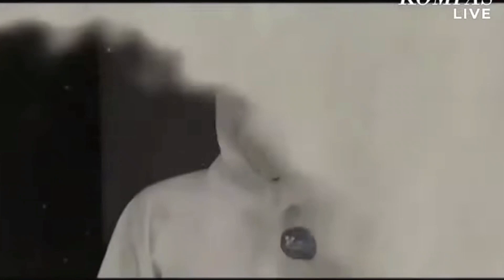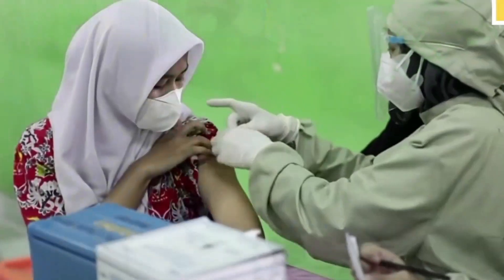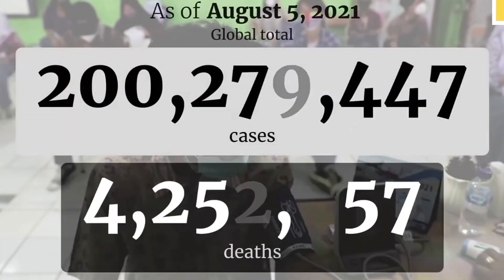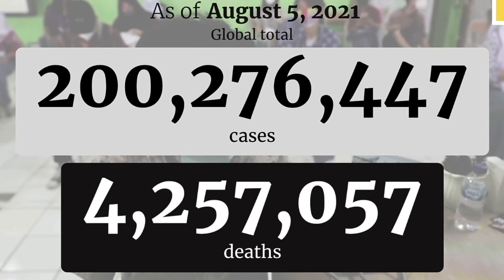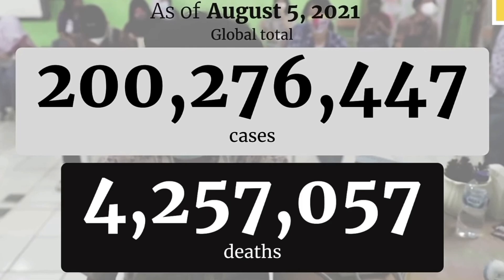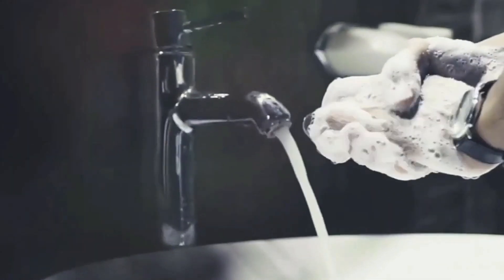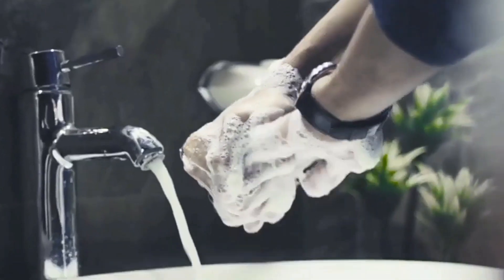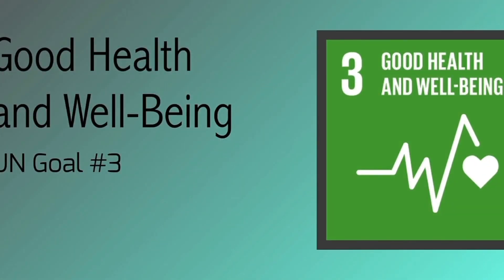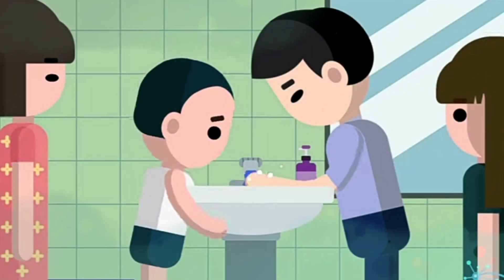Health is a top priority that needs attention, especially during the COVID-19 pandemic. Global COVID-19 cases on August 4, 2021 were about 200 million people. One way to prevent infection with COVID-19 is to wash your hands with soap. This is in line with the goal of SDGs 3, which is to ensure healthy life and promote well-being for all at all ages.